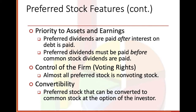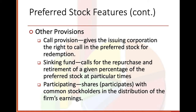One important component is that you cannot vote with preferred stock. Convertibility: preferred stock that can be converted to common stock at the option of the investor — so this is controlled by the investor. Other provisions include a call provision, which gives the issuing corporation the right to call the preferred stock for redemption. Sinking fund calls for the purchase and retirement of a given percentage of the preferred stock at particular times. Participating shares participate with common stockholders in the distribution of the firm's earnings.